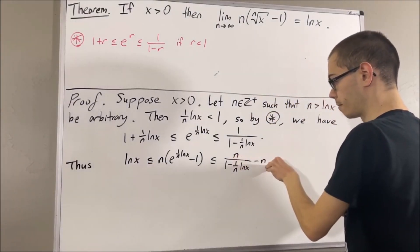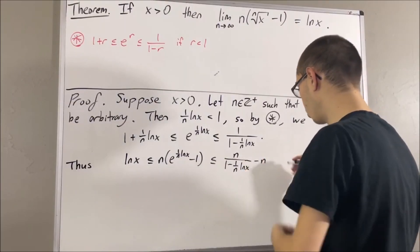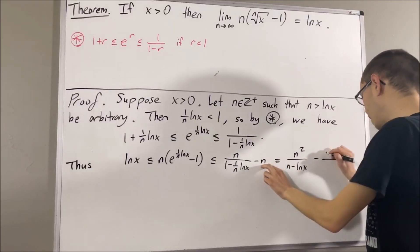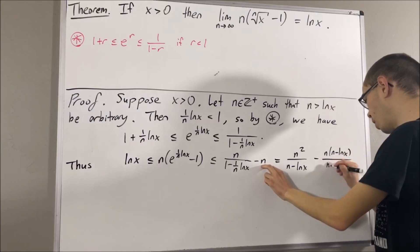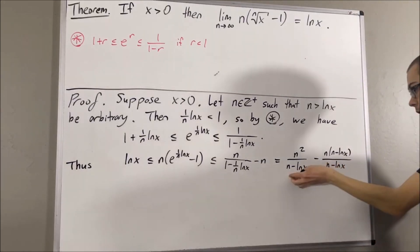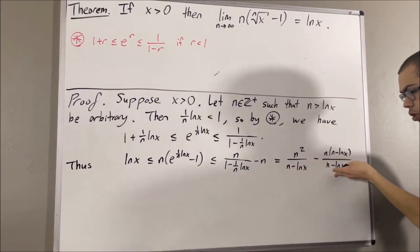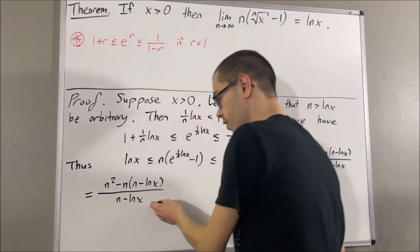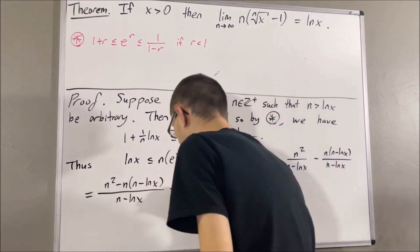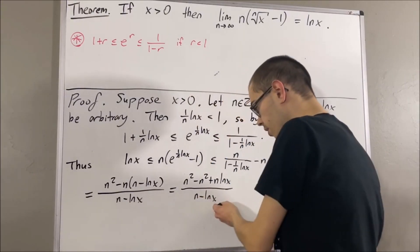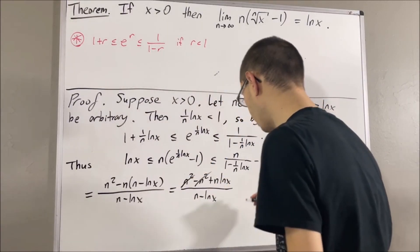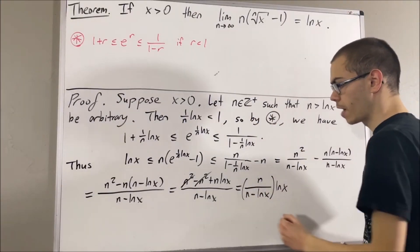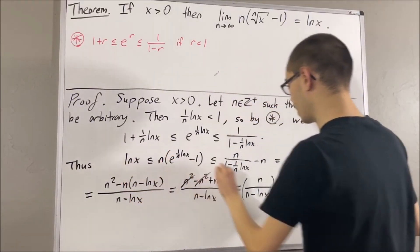Now let's simplify the right-hand side. If we multiply n in both the numerator and denominator, and then rewrite n as n times (n minus natural log of x) all over (n minus natural log of x), we have common denominators and can combine into a single fraction. Distributing minus n across and canceling the n-squared terms, we are left with the simplified expression.